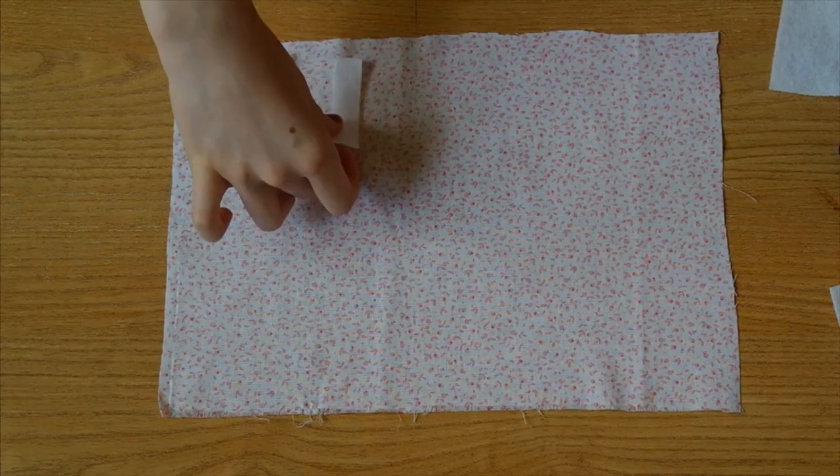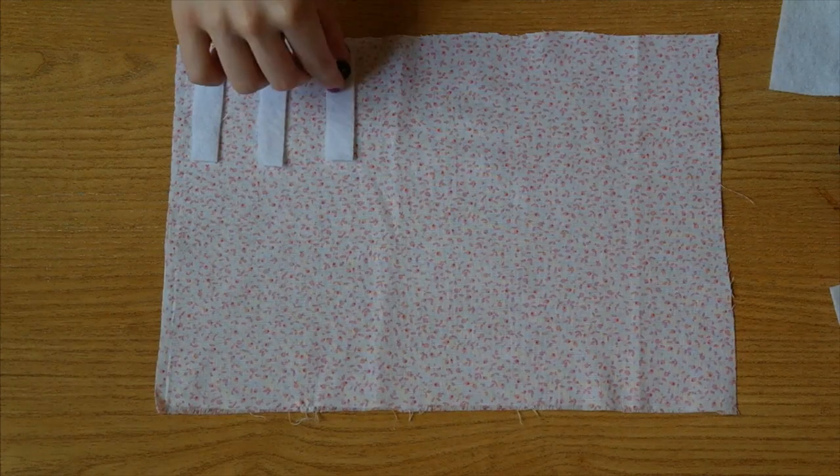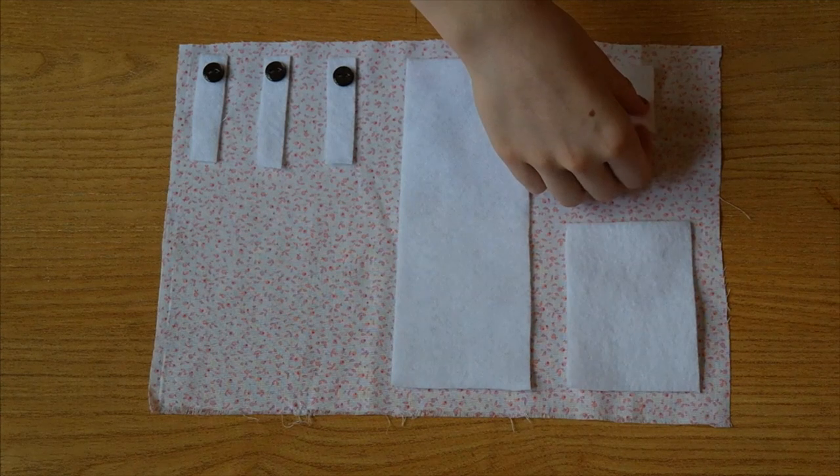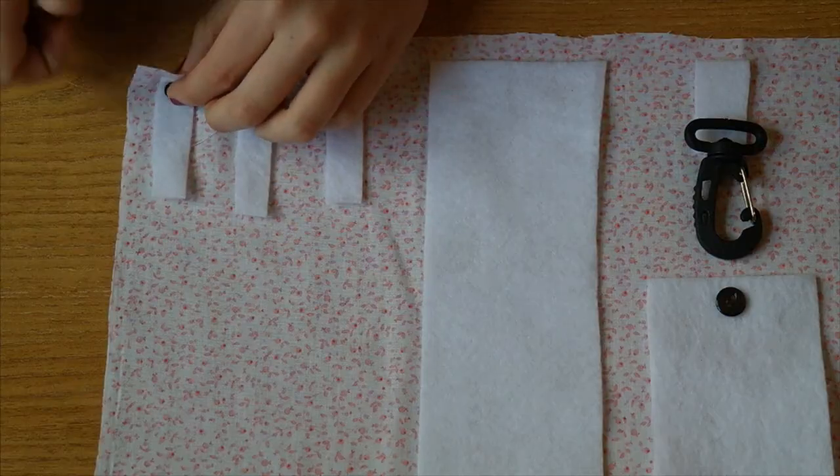Now take your large piece of fabric and turn it upside down. Lay out all your pieces of fabric and for the three smallest pieces, lay out buttons for them. I also took a very small piece of fabric and a hook and laid that out.